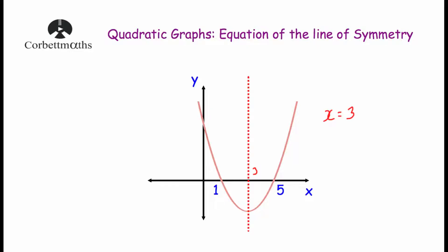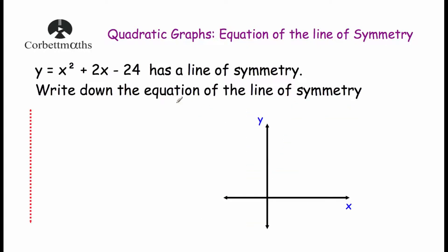Sometimes, rather than drawing the quadratic for us, we have to figure out what it looks like ourselves. Here we've got y equals x squared plus 2x minus 24, and we've been asked to write down the equation of the line of symmetry. We're going to sketch it and find where it crosses the x-axis to find our line of symmetry. Note that there are questions where the graph doesn't cross the x-axis and we have to use completing the square and transformations of graphs - I'll talk about that after this example.